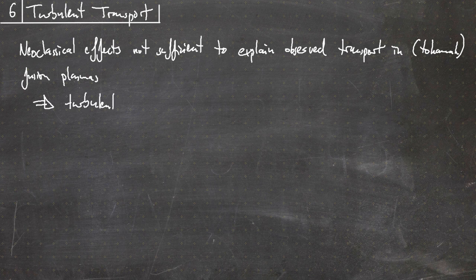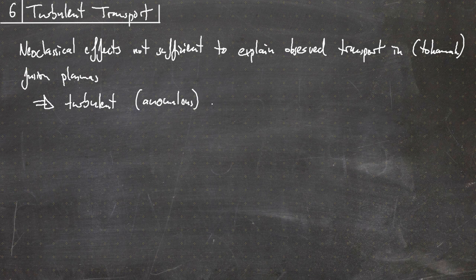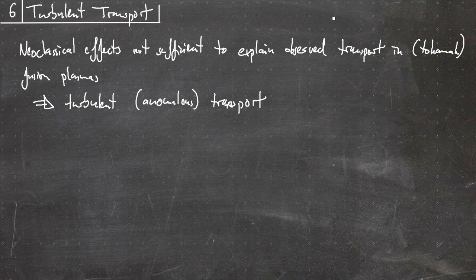What is going on is turbulent transport, which is used as an explanation for the increased additional losses. So turbulent, sometimes also called anomalous. This is a bit of an unfortunate expression because it sounds weird or strange, and it was just used because it was not normal transport, something which could not be explained in the beginning.